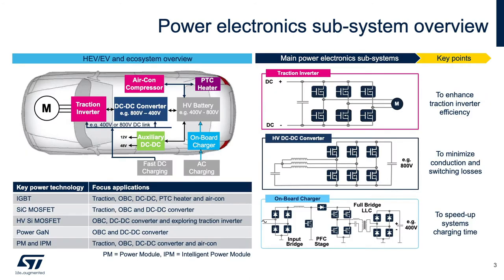Here in this slide, we show the power electronic subsystem mapping and their interconnections. The three main subsystems shown on the left are the traction inverter, high voltage DC-to-DC converter, and onboard charger. The traction inverter is the subsystem driving the motor, ensuring bidirectional AC-to-DC conversion and DC-to-AC inversion between the high voltage battery and the electric motor. It is key to enhance the efficiency of the traction inverter, as this subsystem requires the highest operating power in an electric vehicle.